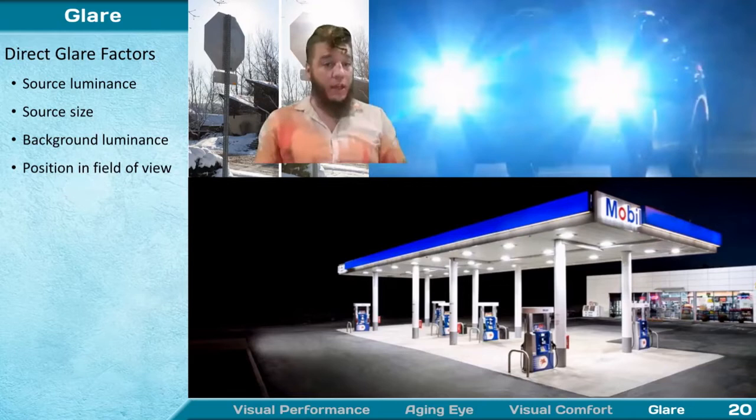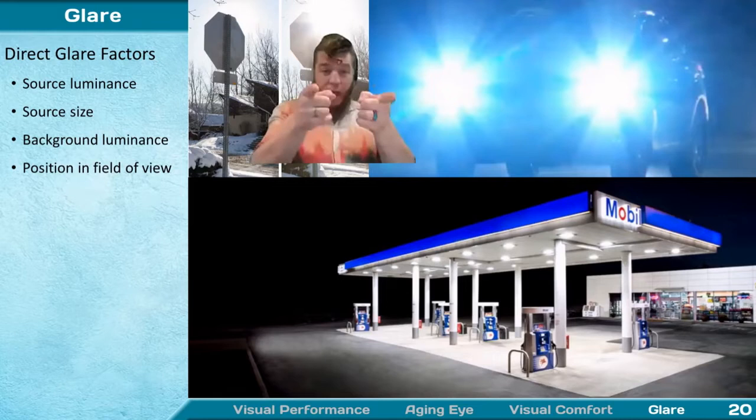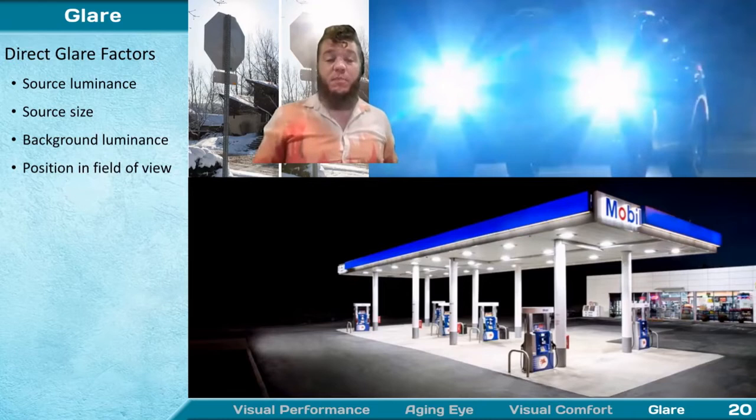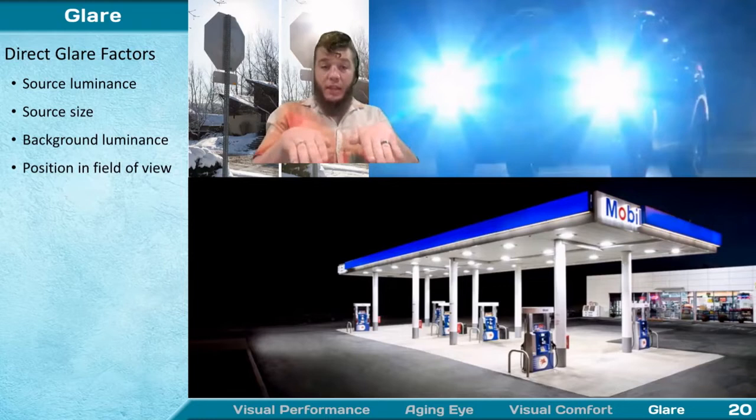Finally, the position in the field of view matters. If a source is directly within your line of sight — like a car coming toward you on the highway — it's much more problematic. This is also why significant optics development goes into car headlights, so they don't shine up into oncoming drivers' eyes — a real safety concern.